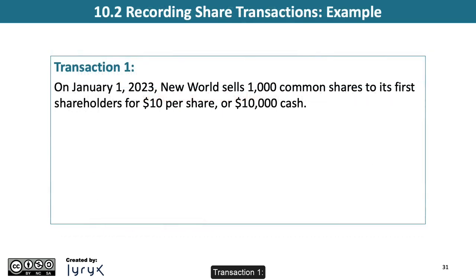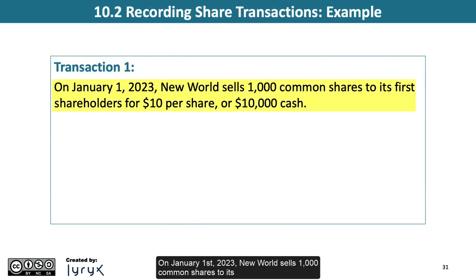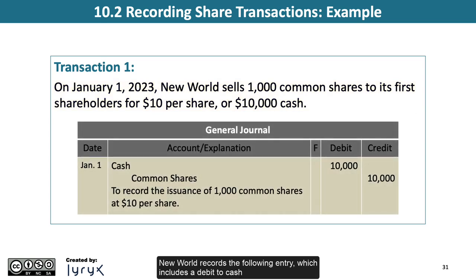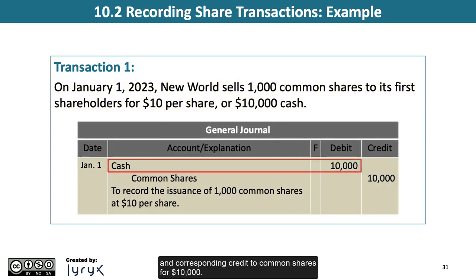Transaction 1. On January 1, 2023, New World sells 1,000 common shares to its first shareholders for $10 per share, or $10,000 cash. New World records the following entry, which includes a debit to cash and corresponding credit to common shares for $10,000.